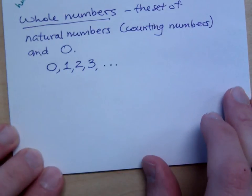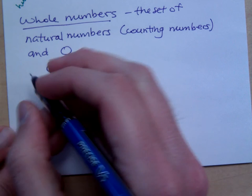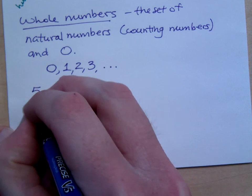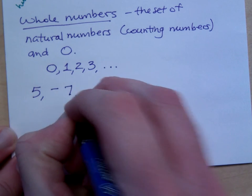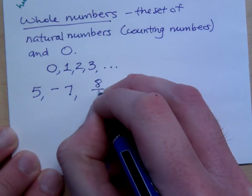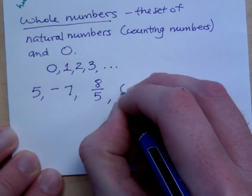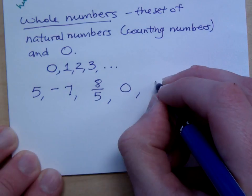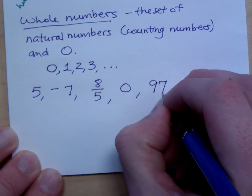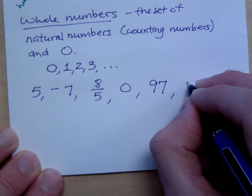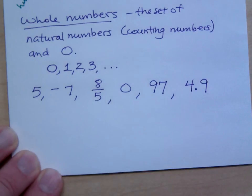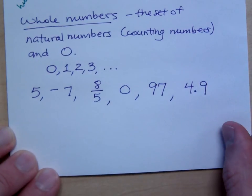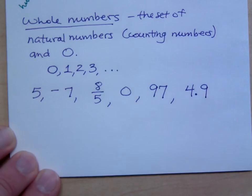So if I were to give you just a set of numbers. If I have 5, negative 7, 8 fifths, 0, 97, 4.9, and I were to ask you to identify the whole numbers here.